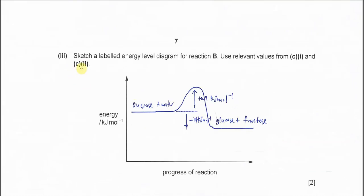Part three: sketch a labeled energy diagram for reaction B. B is the one with catalyst. Use the relevant values from C1 and C2. From here we know that the reactants must be sucrose and water, products must be glucose and fructose. Since it's given -14, you must draw the arrow down.